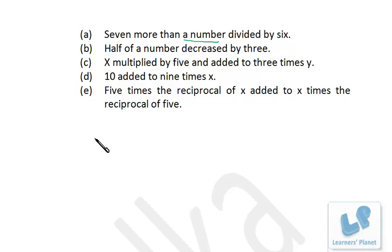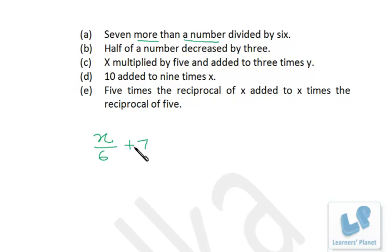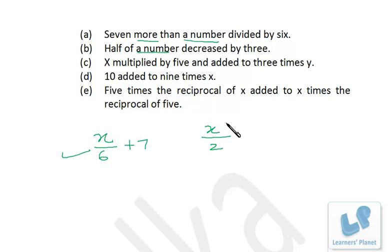'Seven more than a number divided by 6': the number is x, divided by 6 gives x/6, and 7 more means we add 7, giving x/6 + 7. 'Half of a number decreased by 3': half of x is x/2, decreased by 3 gives x/2 − 3.